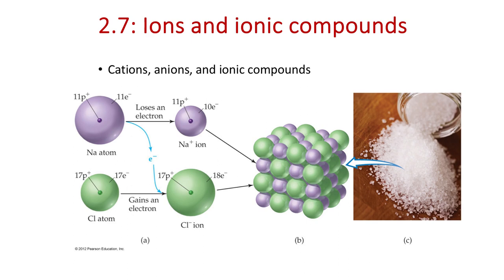Let's get into ionic compounds and some naming conventions for those types of compounds. We'll also get through some other categories of compounds like acids, hydrocarbons, alcohols, and binary compounds like CO2. For an ionic compound, how we're going to recognize these is they generally and almost always will contain a metal—something like sodium paired up with something like chlorine, a nonmetal. So you see a mixture of metallic and nonmetallic elements.